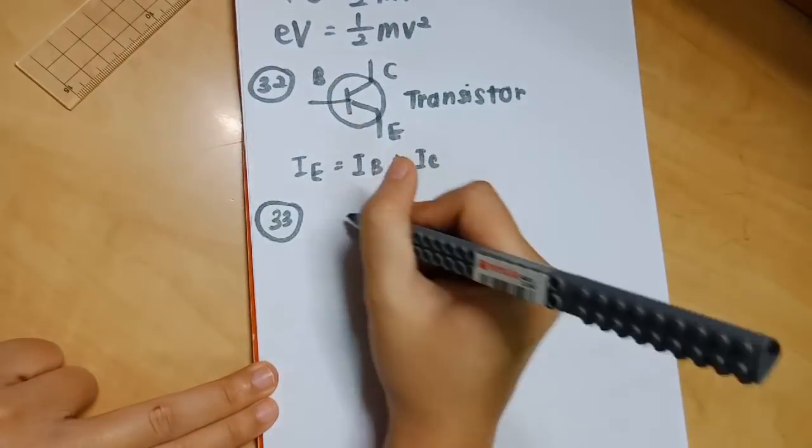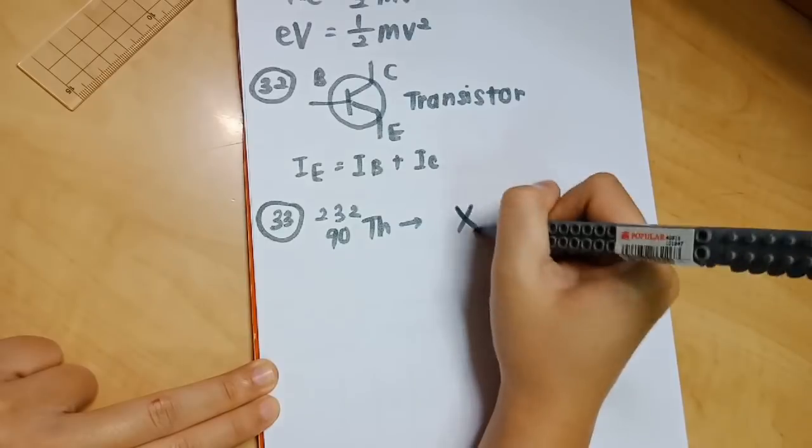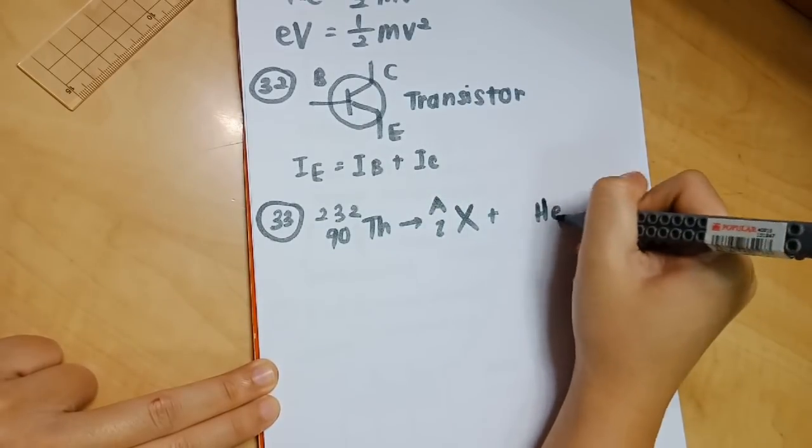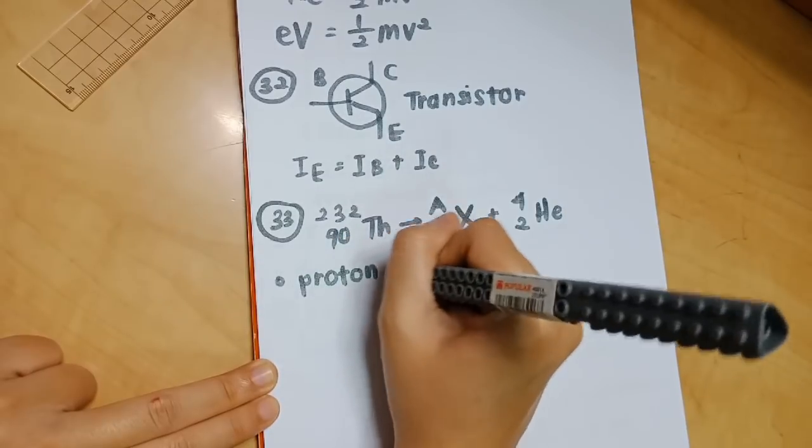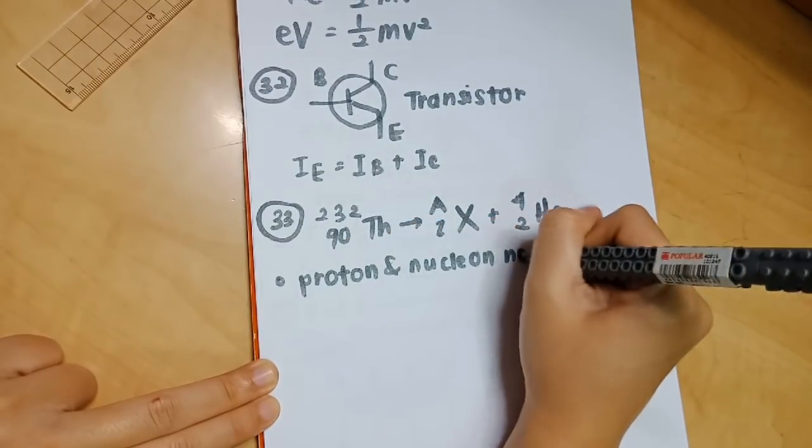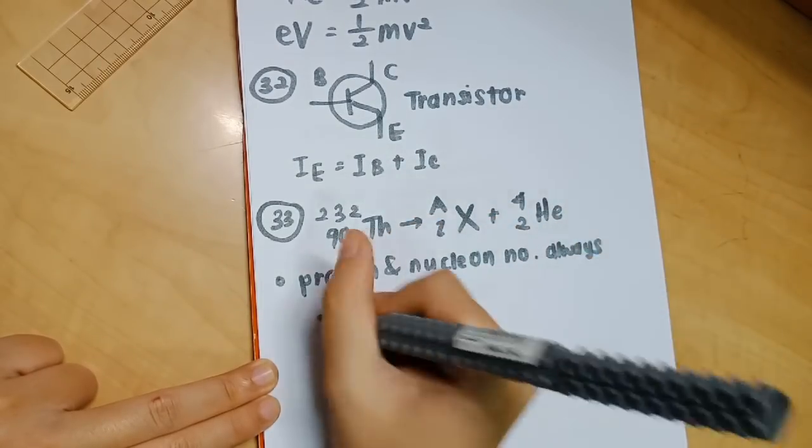Number 33 is not really a formula, but I decided to include this because it's quite important. We have this equation. You must always remember that the proton number and nuclear number will always remain the same.